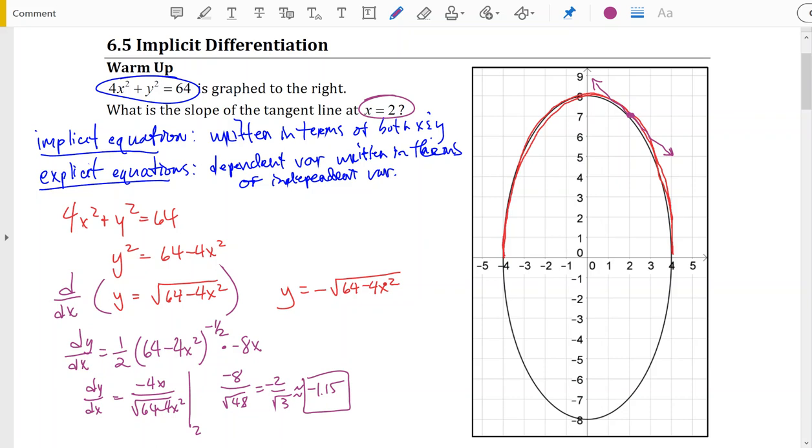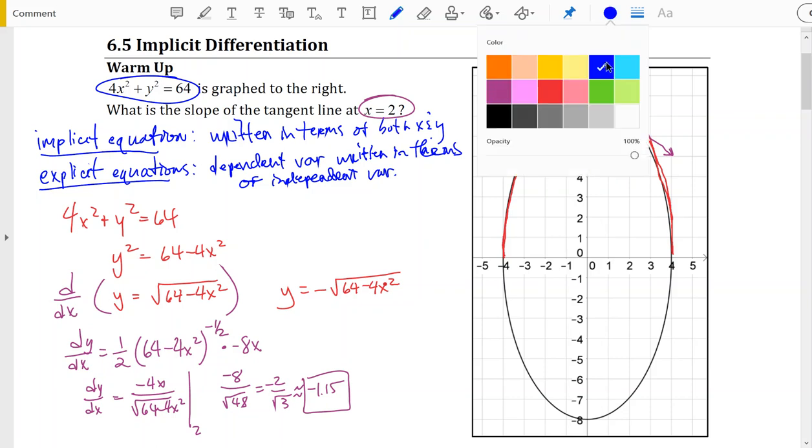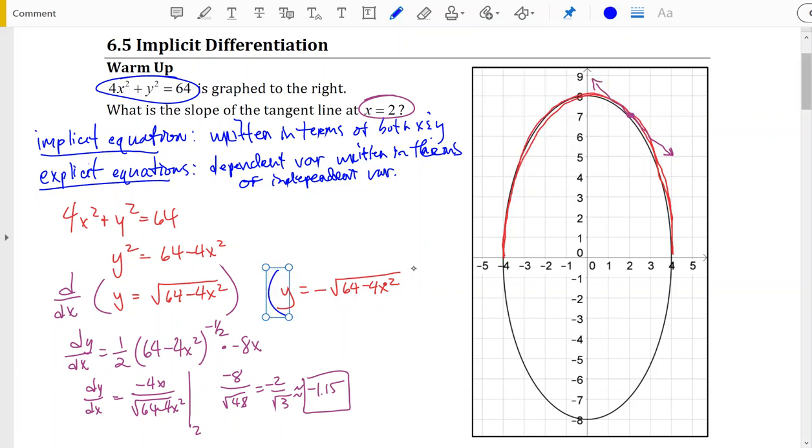The only difference with our second version of the function when we put it in explicit form—and if we wanted to work it out in detail we could go ahead and do the derivative of it as well—but this negative sign is the only difference, so it's going to give us a slope of approximately 1.15, which hopefully also makes sense as an answer especially given the symmetries of an ellipse.